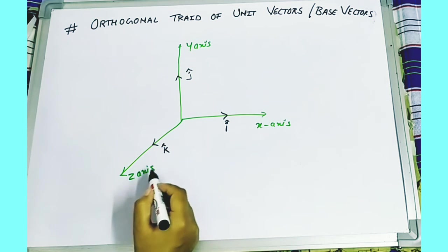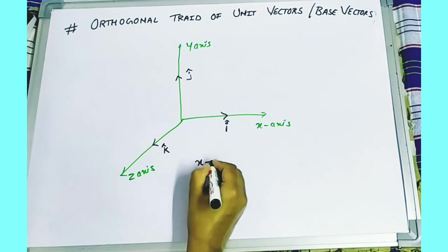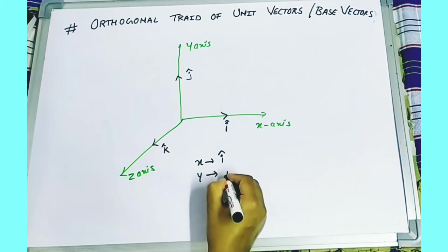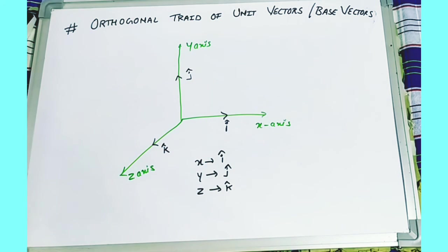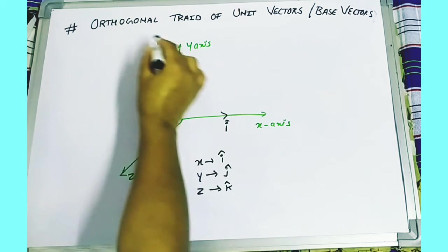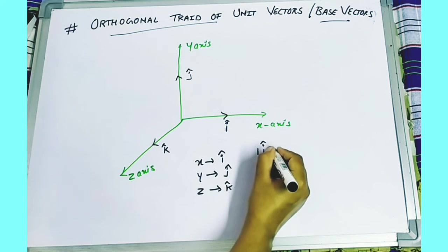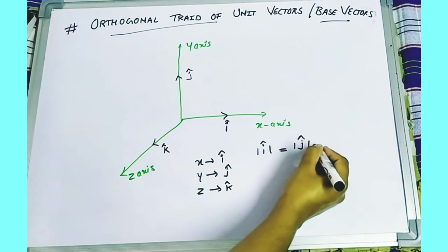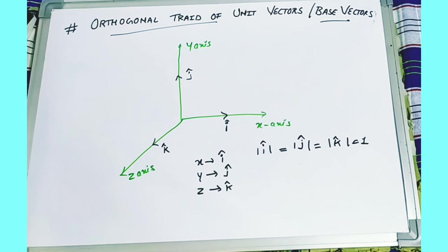So in vectors, instead of writing x, y, z, I can write i-cap, j-cap, and k-cap, which means the same. Writing x-axis means writing i-cap; writing y-axis means writing j-cap; writing z means writing k-cap. Such an arrangement of unit vectors perpendicular to each other is known as the orthogonal triad of vectors or base vectors. We can say that the modulus of vector i equals the modulus of vector j equals the modulus of vector k, which equals 1. Such an arrangement is called the orthogonal triad of unit vectors and the base vectors.